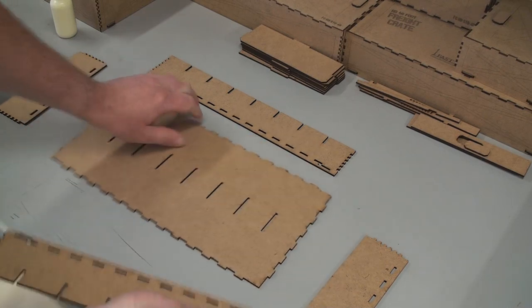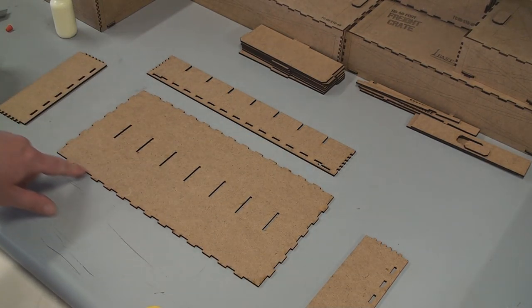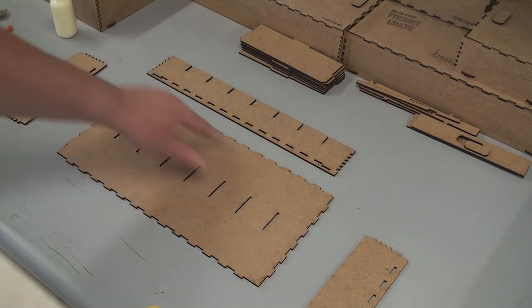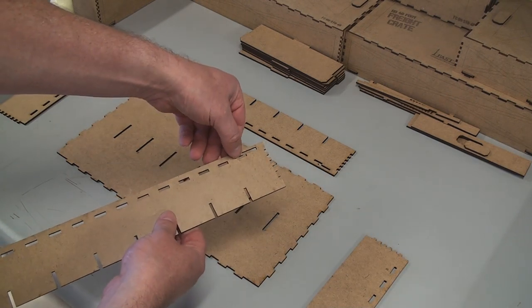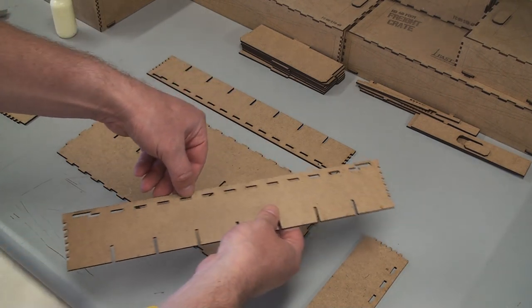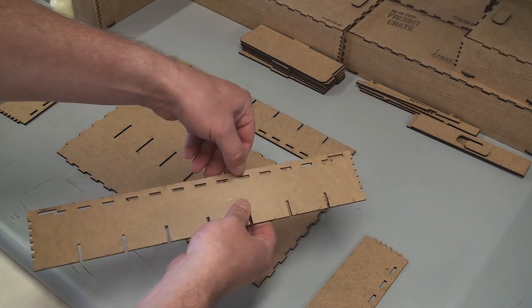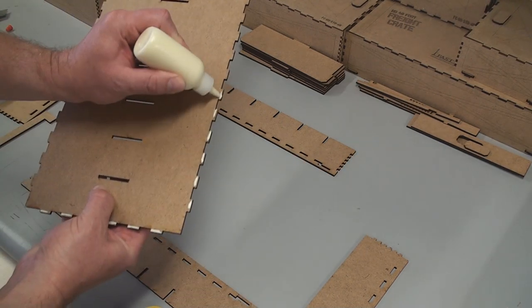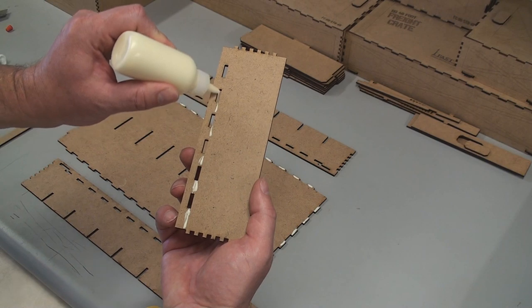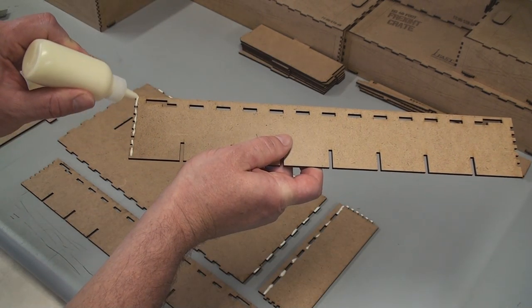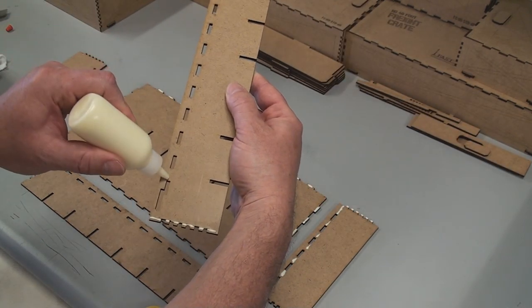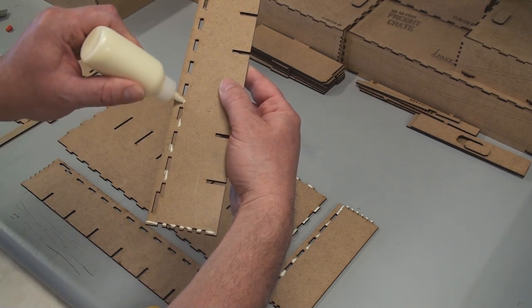So assembling this, same thing. Apply some glue along all the tabs, all the way around. And then we're going to apply the glue all the way down along this area here, in between each of these pockets, and then in between the pockets on the long side. Okay, now we can assemble these.